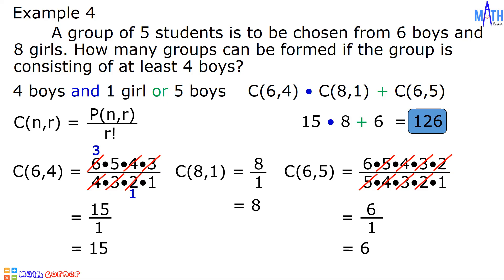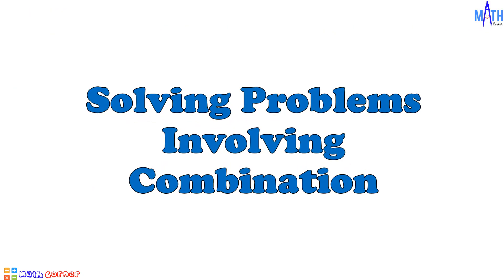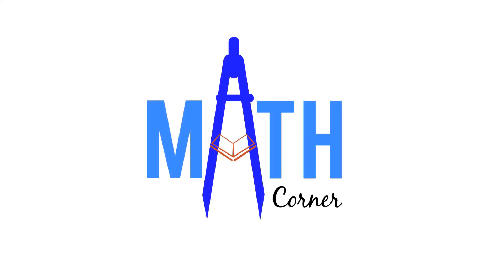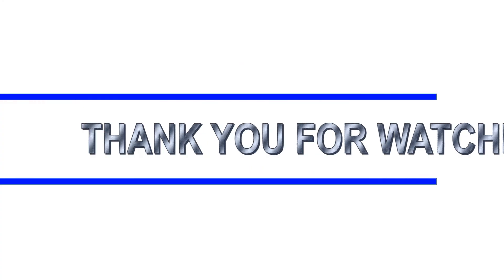The total number of possible groups is 126. We are done solving problems involving combination. That's all for this video. Thank you for watching.